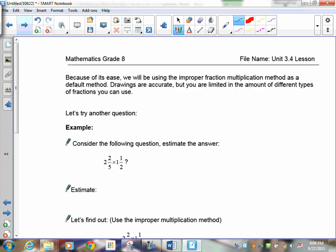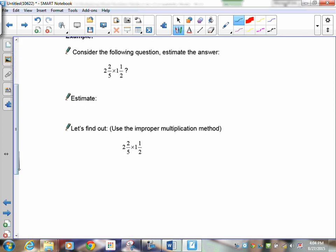Turn your page. Because of its ease, we're going to be using the improper fraction multiplication method. So here we go. First thing you have to do is make sure that there's no mixed fractions, that everything turns into an improper fraction. I'm not going to do the estimate. Forget about the estimate. Let's just do the improper fraction change. And I'm going to use the space right below it here. So this becomes 5 times 2 plus 2 over 5. And I'm going to multiply that by 2 times 1 plus 1 over 2.